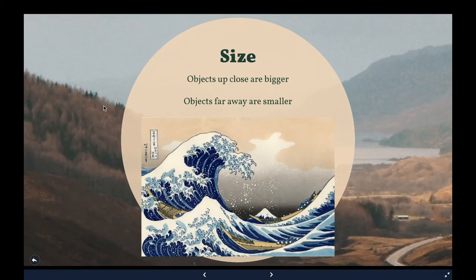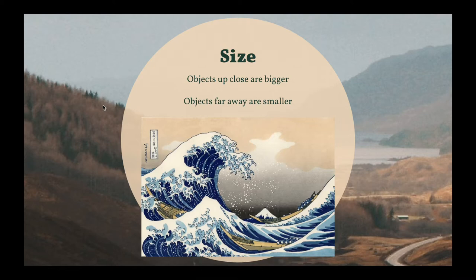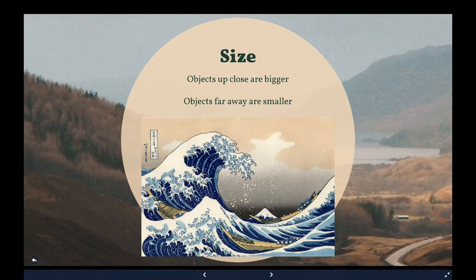First, size. Objects up close are bigger. Objects far away are smaller. If I'm looking at this artwork by Hokusai, the wave and the boat appear much larger, and the mountain is much smaller. In reality, the wave would probably be a lot smaller than a giant mountain. Same thing with a boat. But in the artwork, he created the wave and the boat to be much larger, so they are closer.